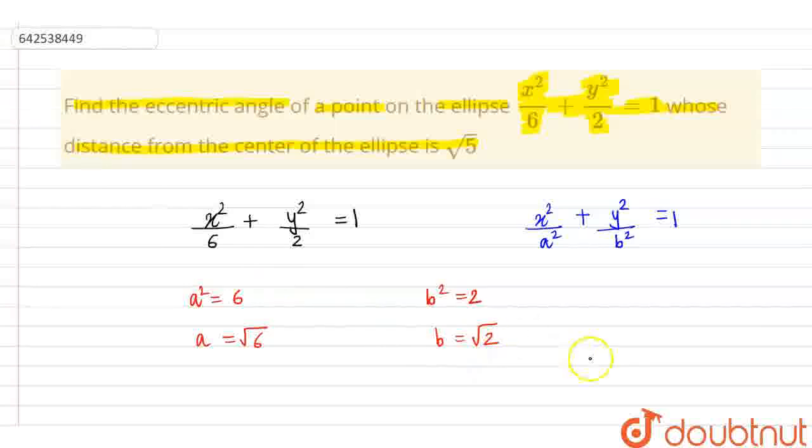Now, any point will be of the form (a cos theta, b sin theta) where theta is the eccentric angle.